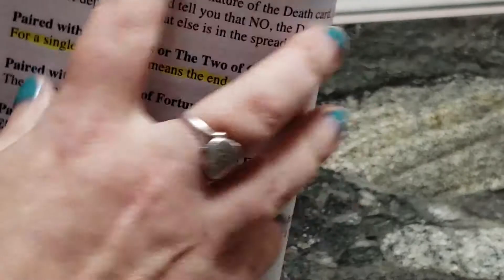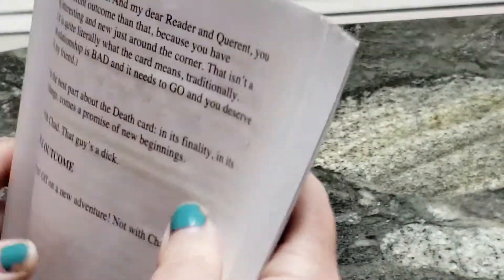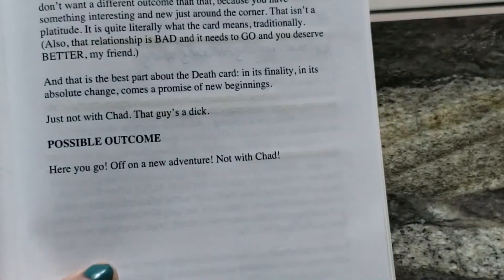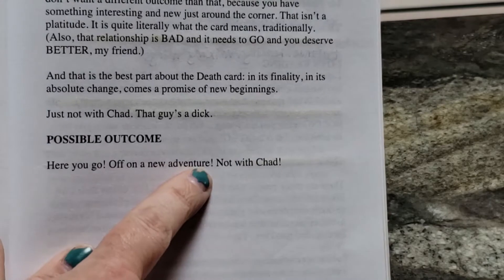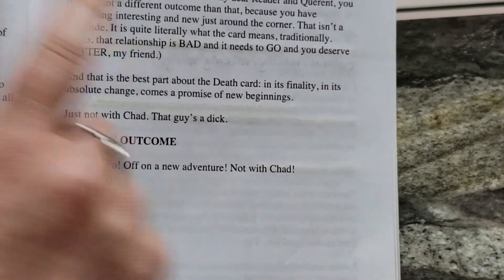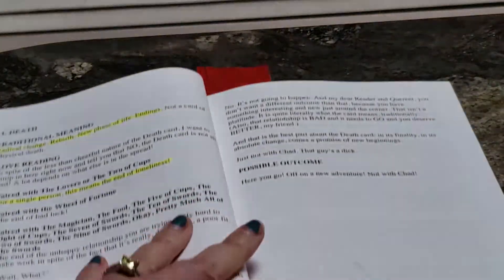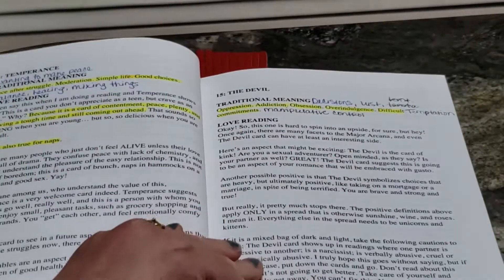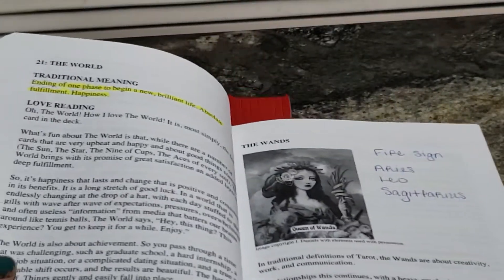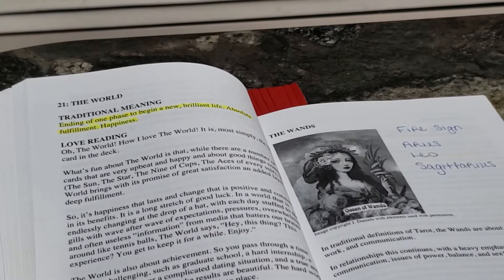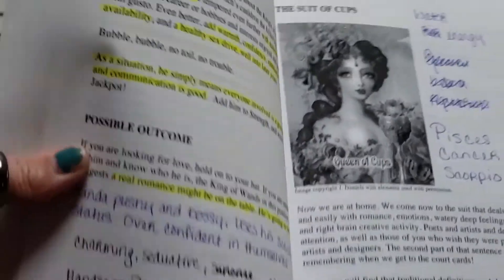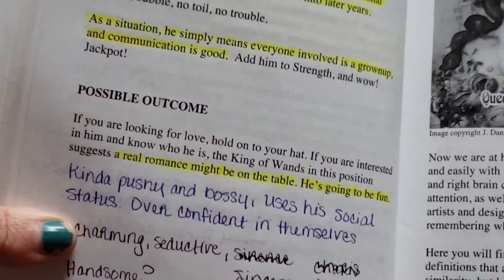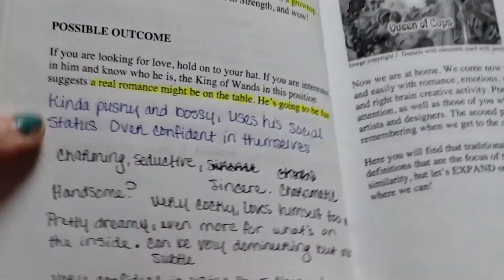And then it also talks about the possible outcome. So when it shows up in the end, this is what it means. And it's really funny. Like, okay, if you get the death card as your result in a tarot reading for the romance reading, it means here you go off on a new adventure, but not with Chad. Just not with Chad. That guy's a dick. So it's a really funny, like there's a lot of humor in it and I really do like that. It's a funny book. So there's a lot of tips in there about that.